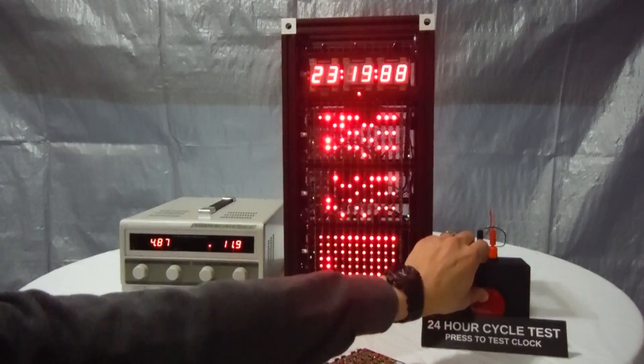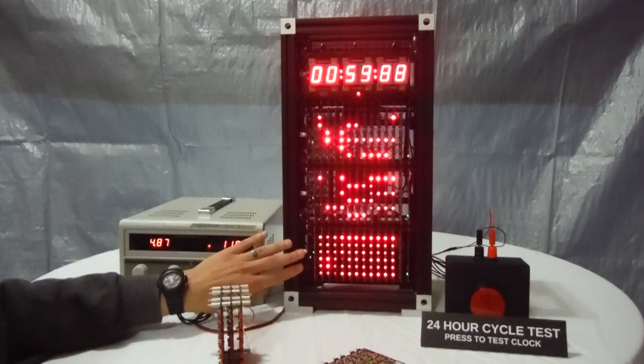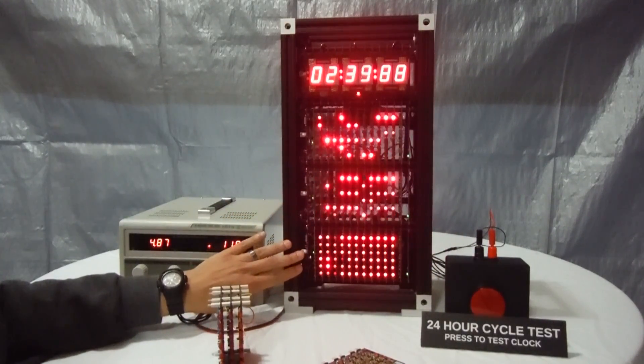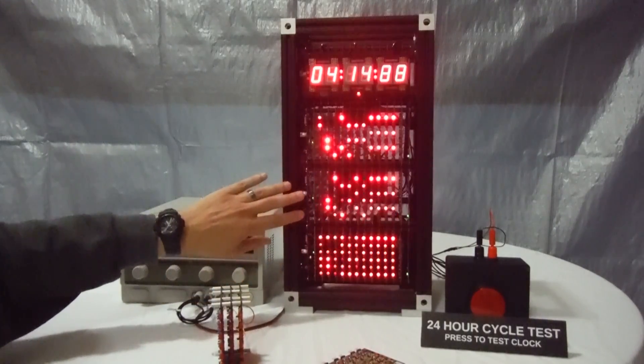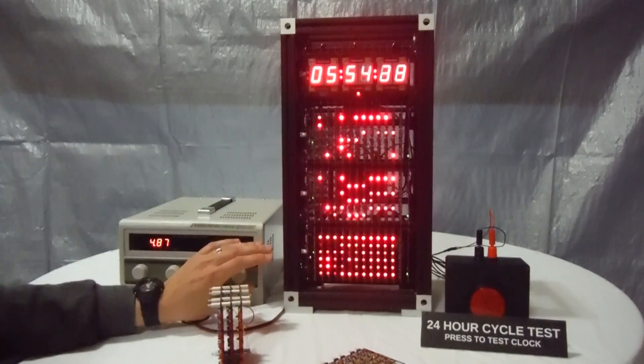If I press the button, you can see that the second stack is running too fast to see. On the minutes stack, you can actually tell what's going on with the gates.